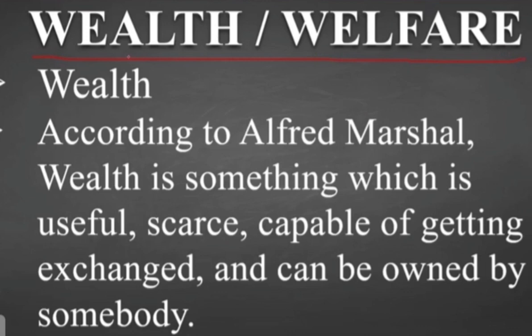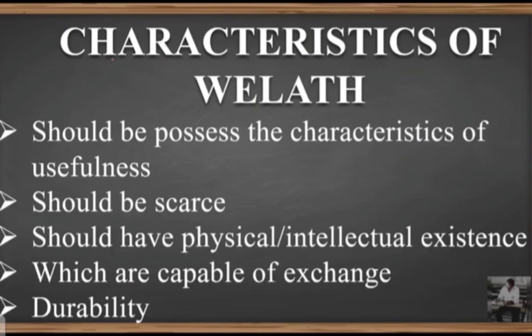Further details and related points of welfare will be covered after finishing the characteristics and types of wealth. Now coming to the characteristics of wealth — there are five points. The first characteristic is usefulness: whichever wealth we are possessing must have usefulness, meaning it must satisfy our wants and needs. Examples include house and vehicles.